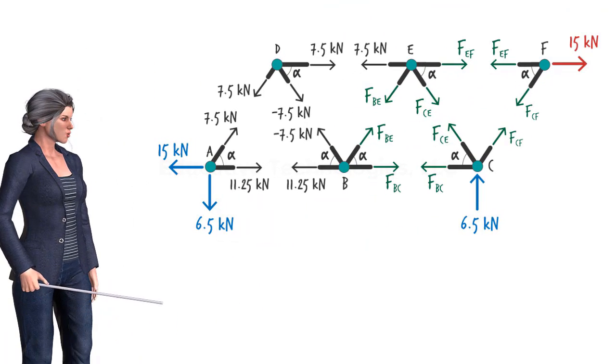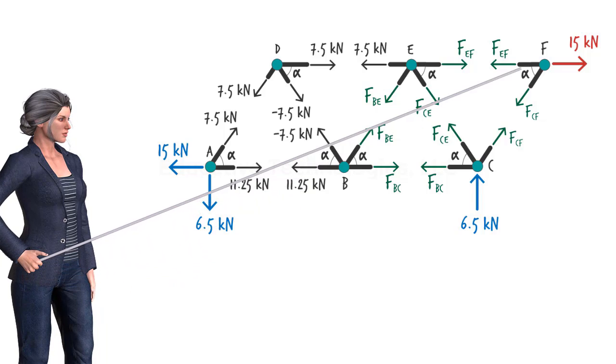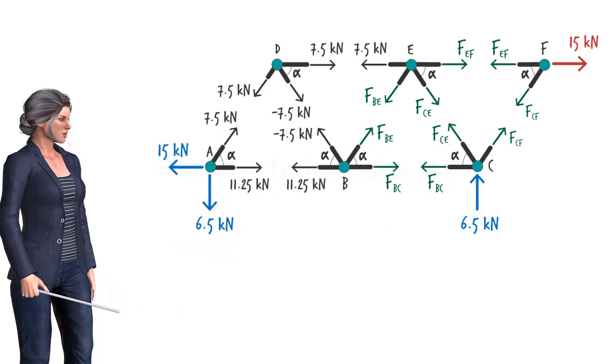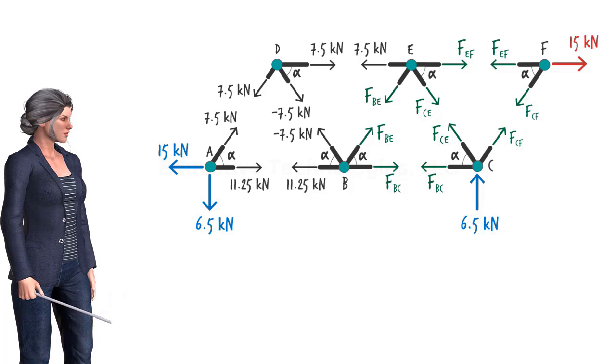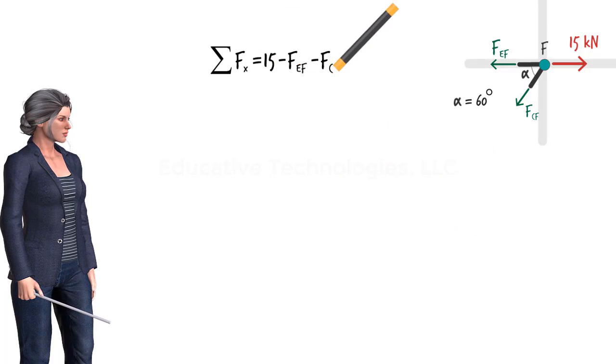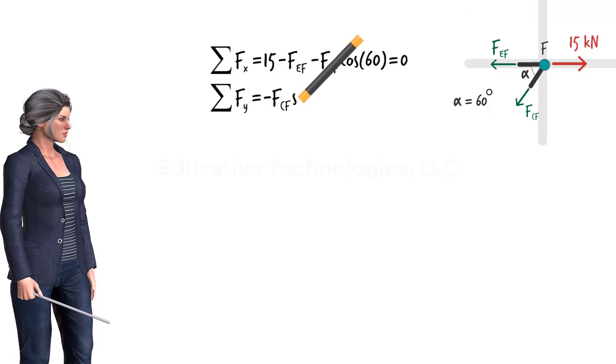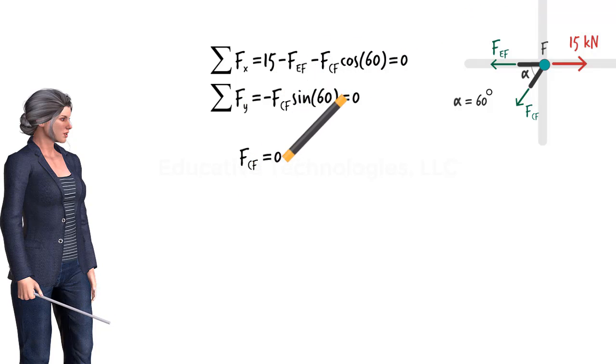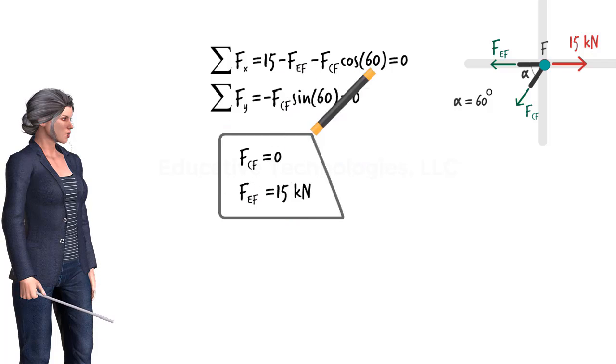Next, we can consider either joint B or F, since each is subjected to two unknown forces only. Let's go with joint F. We can write the equilibrium equations for the joint this way. Solving them for the unknown forces, we get...